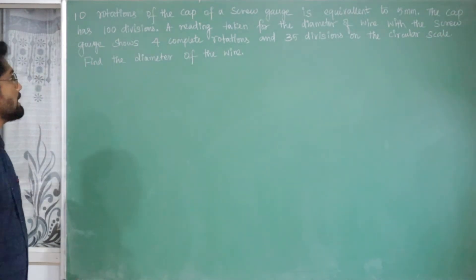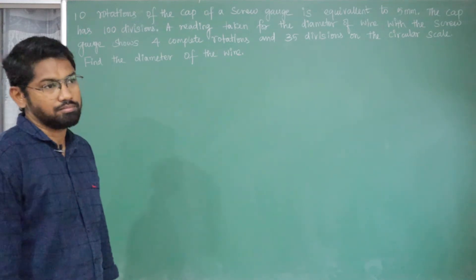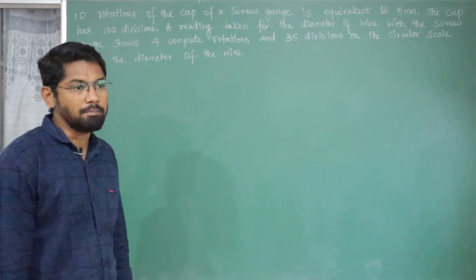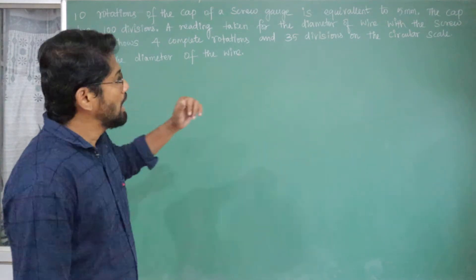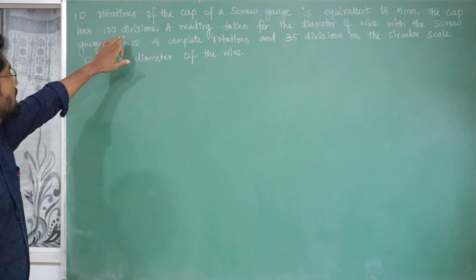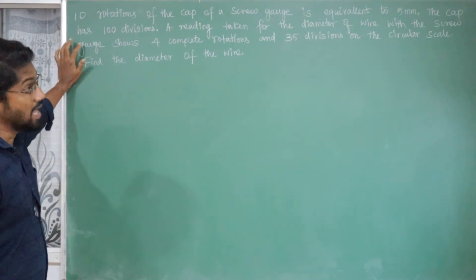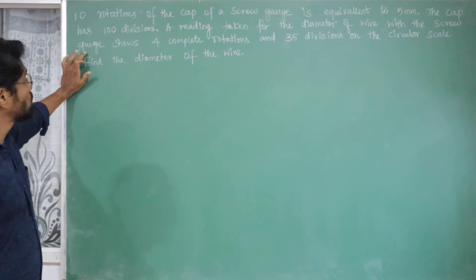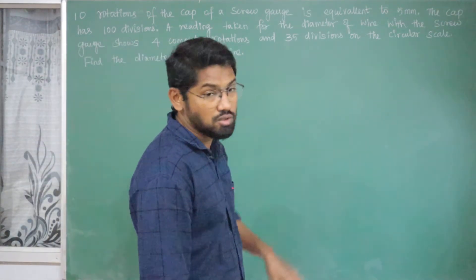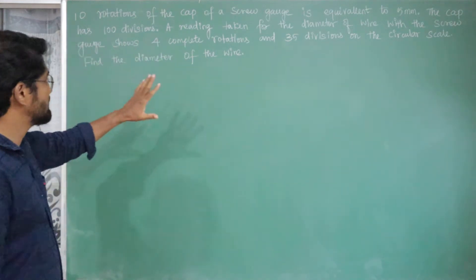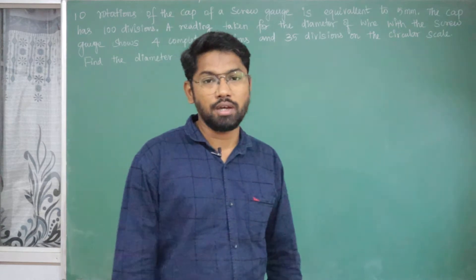The problem is: 10 rotations of the cap of a screw gauge is equal to 5mm. From this information, we can calculate the least count. The cap has 100 divisions. The reading is taken for the diameter of the wire. The screw gauge shows 4 complete rotations and 35 divisions of the circular scale. Find the diameter of the wire.